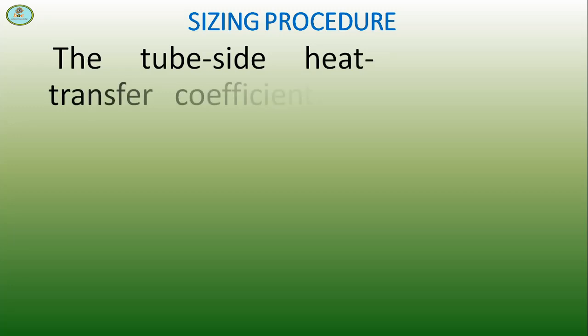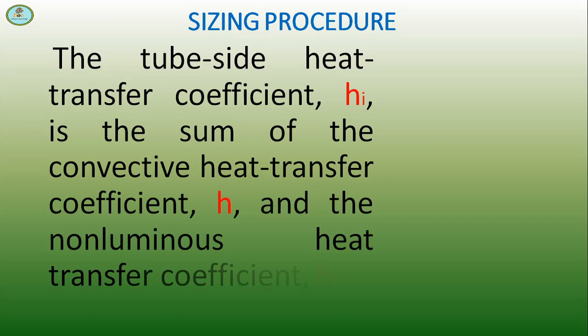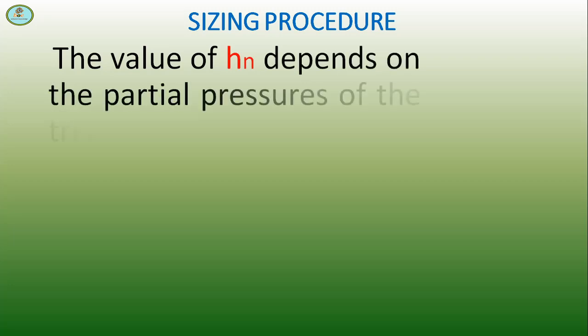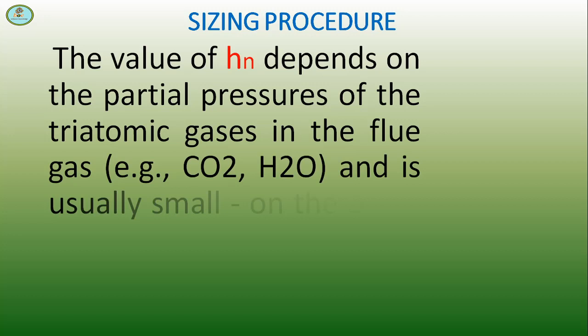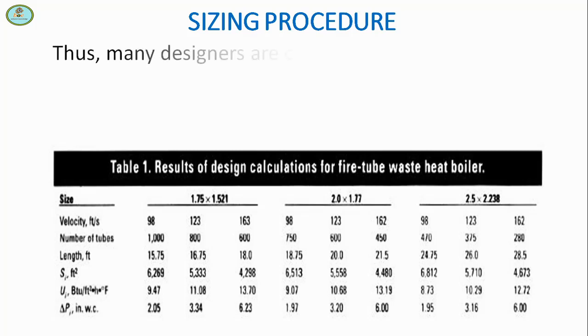The tube side heat transfer coefficient Hᵢ is the sum of the convective heat transfer coefficient Hc and the nominal heat transfer coefficient Hn. The value of Hn depends on the partial pressure of the triatomic gases in the flue gas, for example CO₂, and is usually small, on the order of 5% of Hc in fire tube boilers. Thus many designers are conservative and neglect Hn.